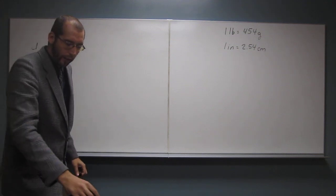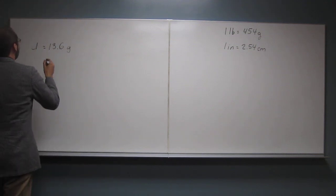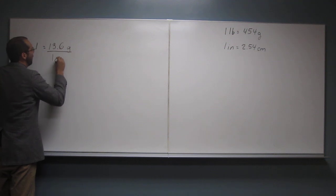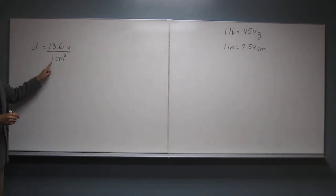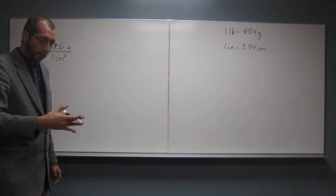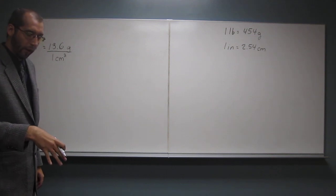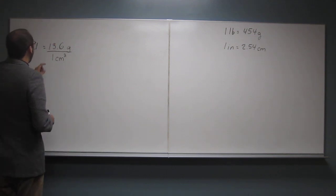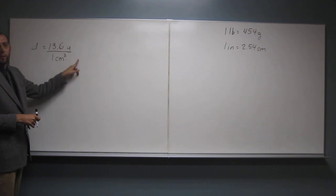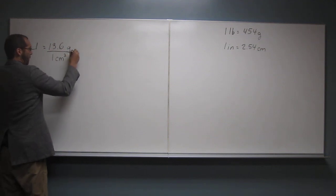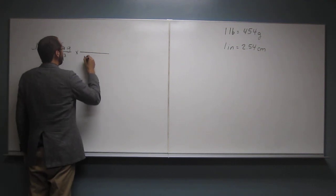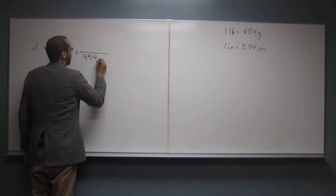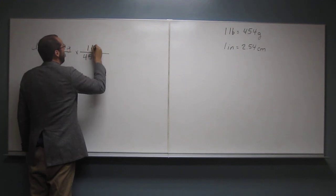If you do it the long way, you'll never get it wrong. Okay, so 13.6 grams per centimeter cubed, like that. We want it in pounds per inches cubed. Okay, so how do we convert grams to pounds? We have a conversion factor up there, right? So we can do that one directly. That one's nice. So 454 grams to one pound.